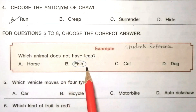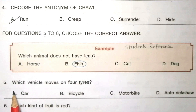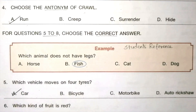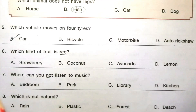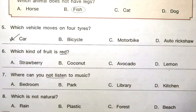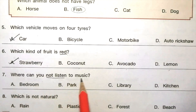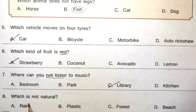For questions 5 to 8, choose the correct answer. Question 5: which vehicle moves on four tires? Car, bicycle, motorbike, auto rickshaw. The answer is A, car. Question 6: which kind of fruit is red? Strawberry, coconut, avocado, lemon. The answer is A, strawberry. Question 7: where can you not listen to music? Bedroom, park, library, kitchen. The answer is C, library. Question 8: which is not natural? Rain, plastic, forest, beach. The answer is B, plastic.